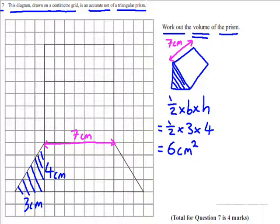So we're going to do area of the cross section times by the length. So area of the cross section is 6. So the volume is 6 times by 7. So the volume is 42 centimeters cubed.